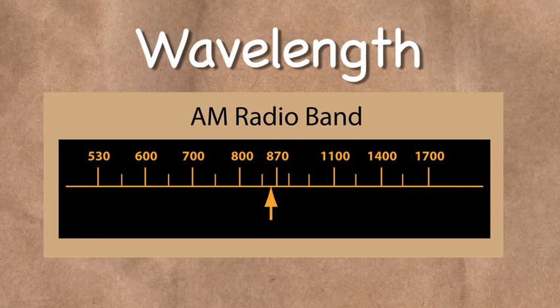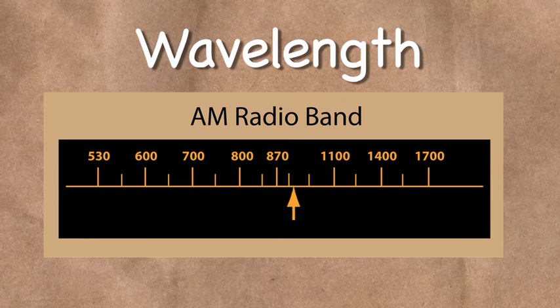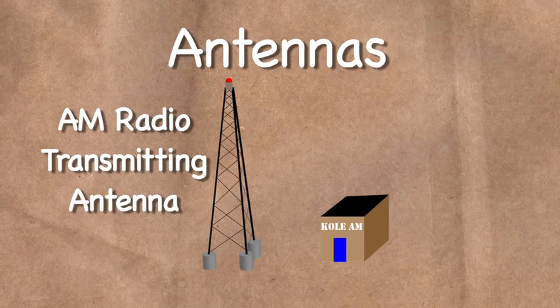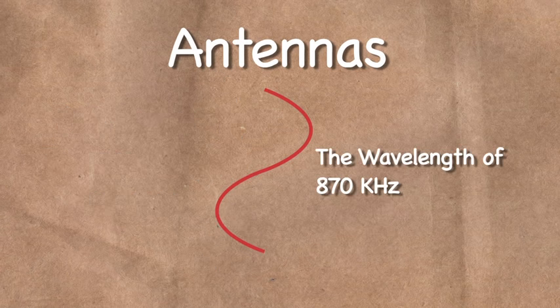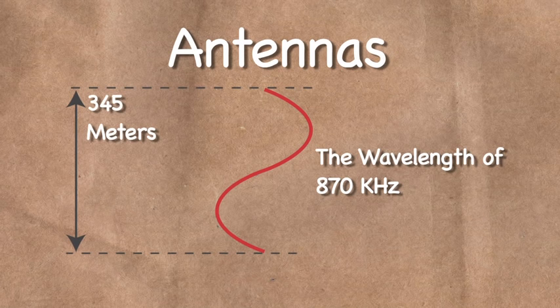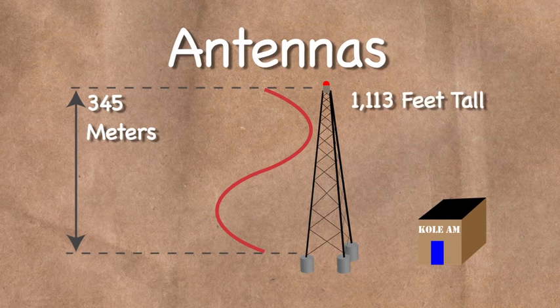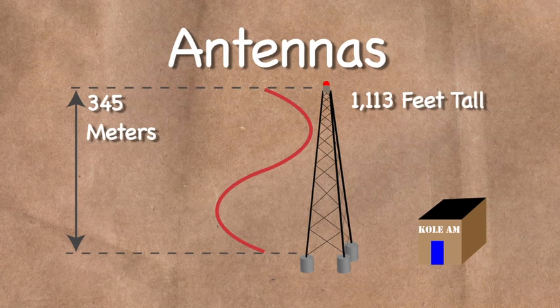That 870 kHz RF signal, mentioned earlier, is the frequency used for one of the channels in the AM radio band. In order to broadcast the signal, an antenna is required of the correct size for the frequency's wavelength. An antenna of the same height as the wavelength would be 345 meters tall, or 1,113 feet. This would make a very impractical and costly tower to build.